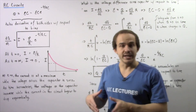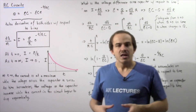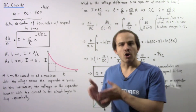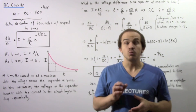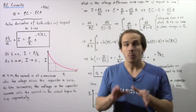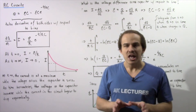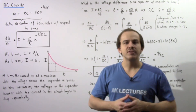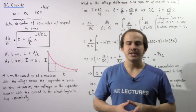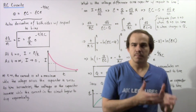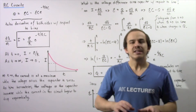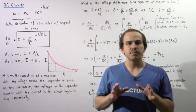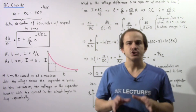At a time equaling infinity, the electric current within the RC circuit will be zero because the capacitor will have the same voltage as the battery, and there will be no electric potential difference within the circuit.